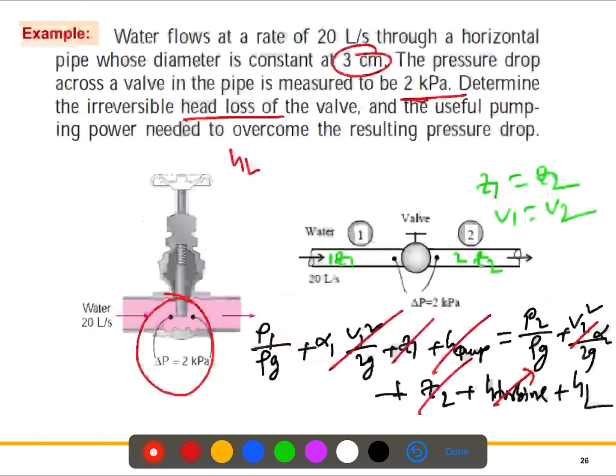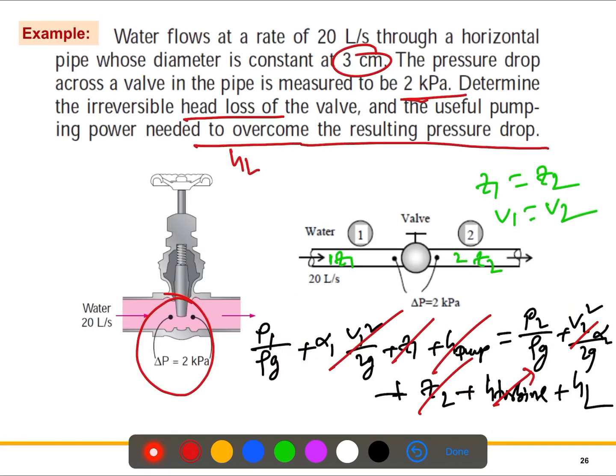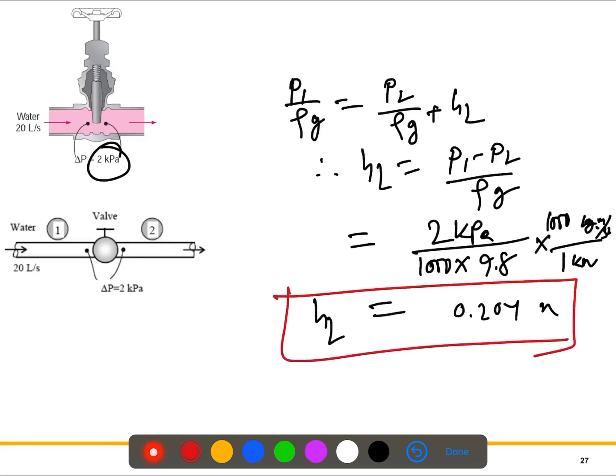So now we need to solve for the useful pumping power needed to overcome this pressure drop. There are two different ways. I'll show you the simple way, like how we can calculate the pumping power. For the pumping power, the formula Ẇ_pump, we say this is the pumping power.